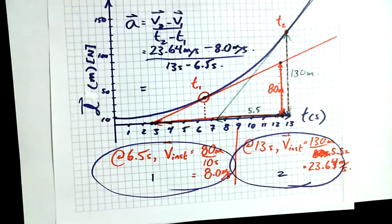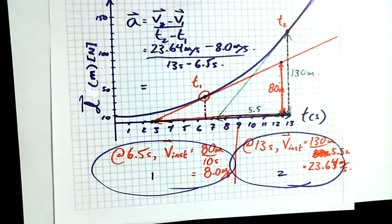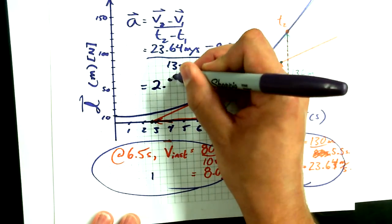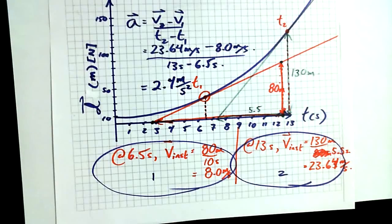Somebody quick on the calculator — remember, do the numerator and then the denominator. The result is about 2.4 meters per second per second, or equivalently 2.4 meters per second squared. So that's an average acceleration of 2.4 meters per second squared between time 1 and time 2.